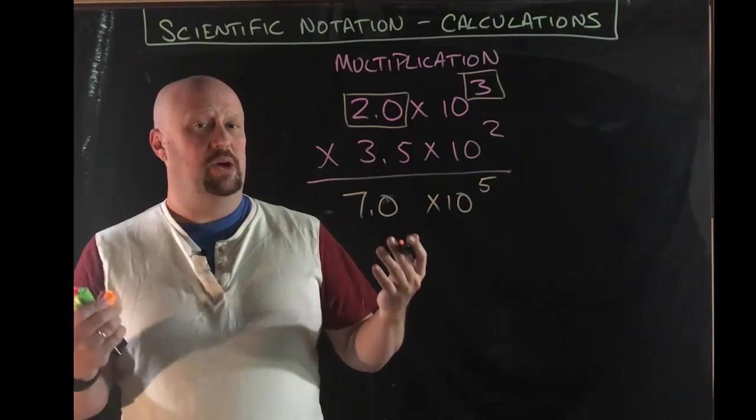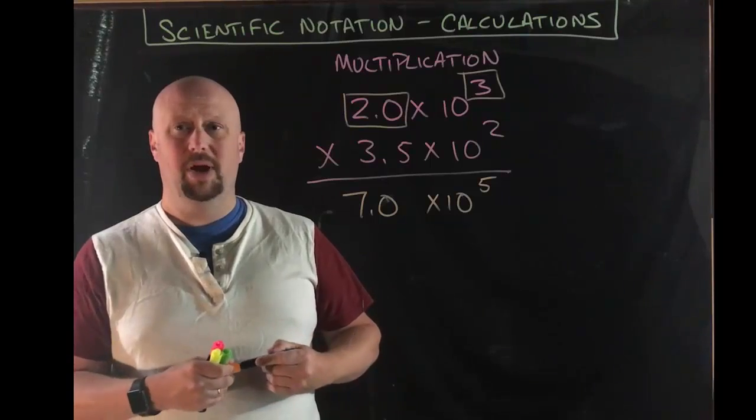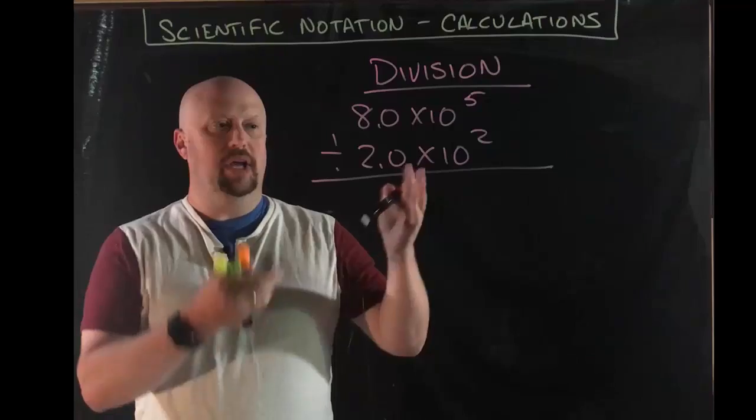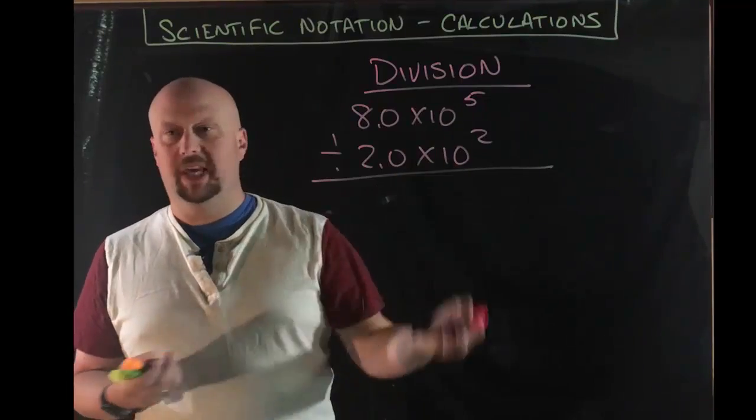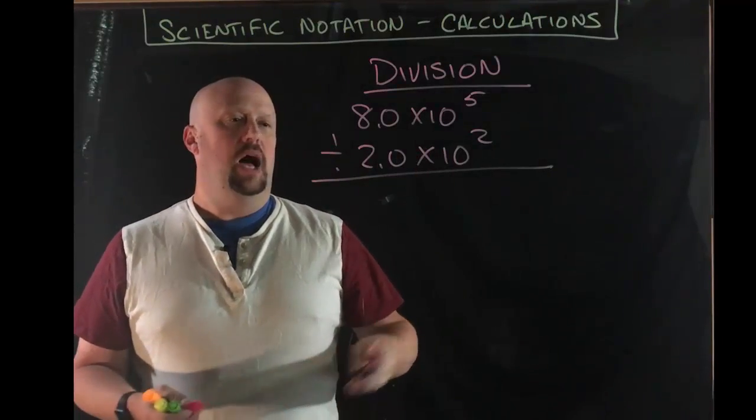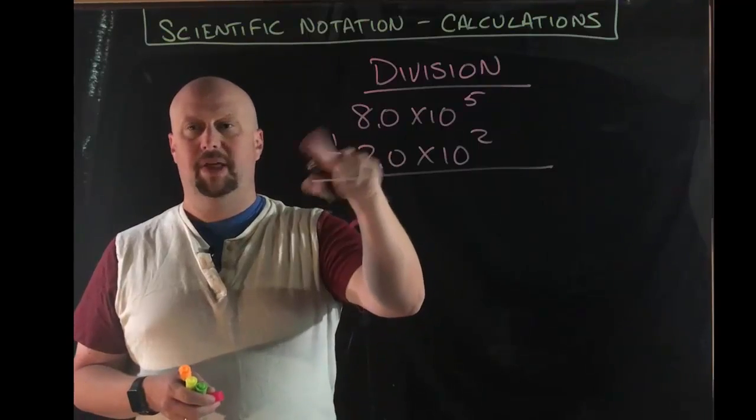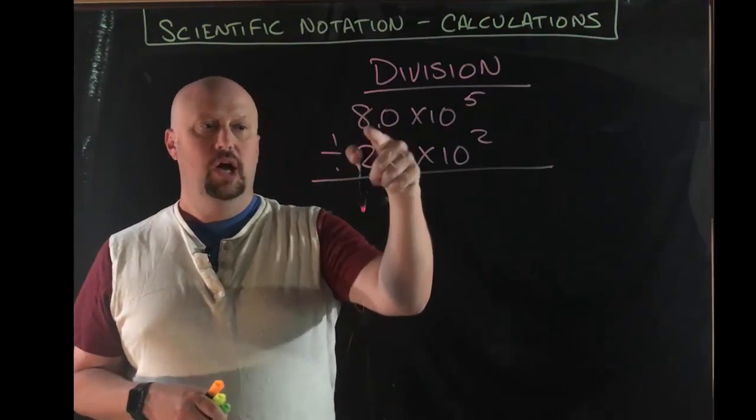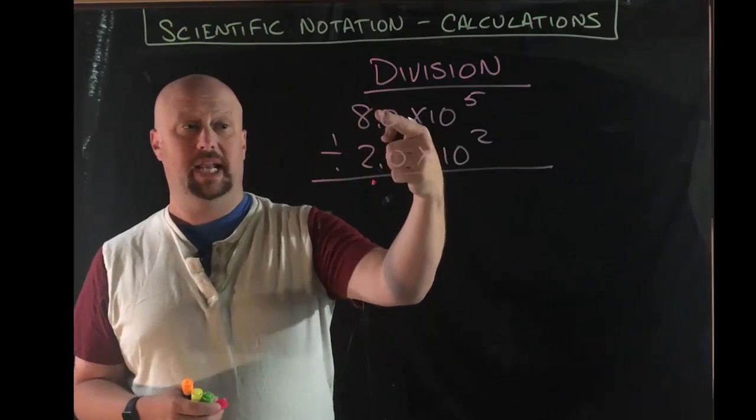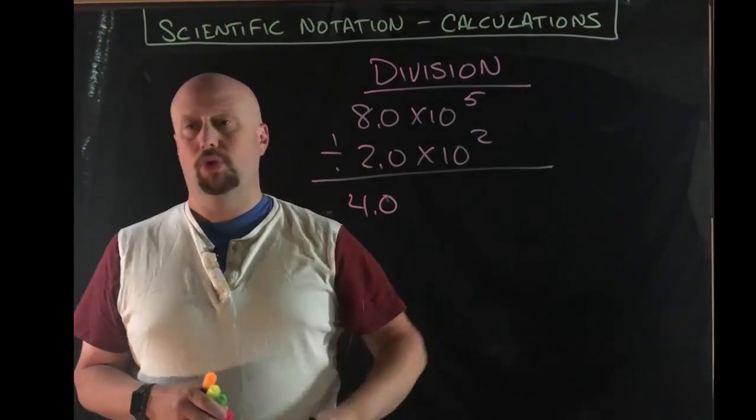I'm going to do a division one real quick. You'll see that it's very similar. In fact, if you're thinking about it, you can probably already think about what's going to happen. So pretty straightforward division problem. Again, two scientific notation numbers. Difference here is we're going to divide them instead of multiplying them. The math part is the same. In other words, whatever the mathematical operator is, which is division, we're going to do that operation on the coefficients. So I'm going to divide 8 by 2. 8 divided by 2, of course, is 4.